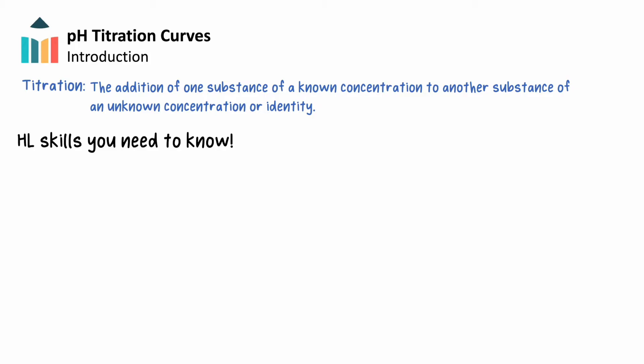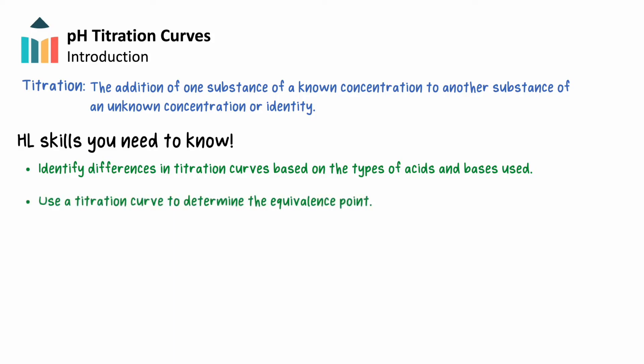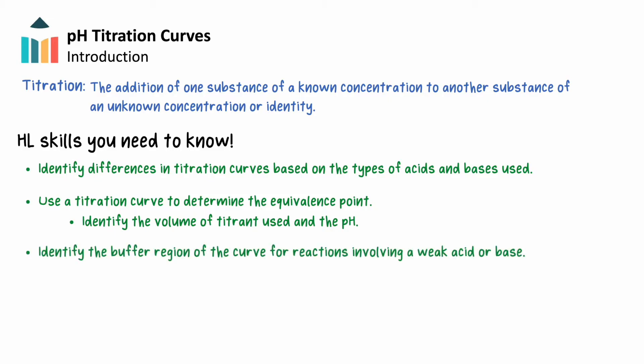As an HL student, you'll need to be able to understand the following concepts for any titration. You'll need to identify and explain differences in titration curves based on the types of acids and bases used in the reaction. When analyzing a titration curve, you'll need to be able to identify the equivalence point, as well as the volume of titrant used and the pH of the solution at the equivalence point. For titrations involving a weak acid or weak base, you'll need to identify the buffer region. And lastly, you'll need to choose an appropriate indicator that will depend on the acid and base involved in the titration.